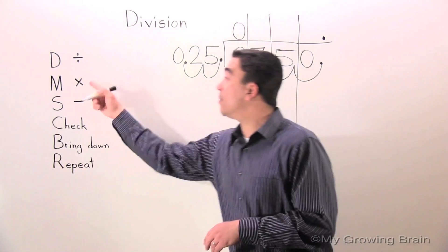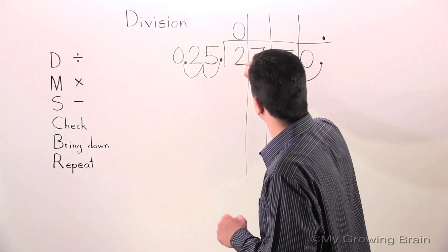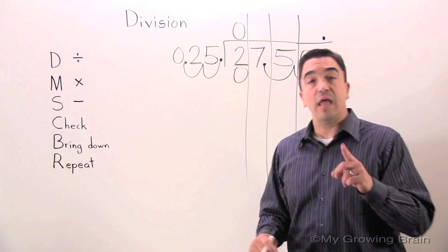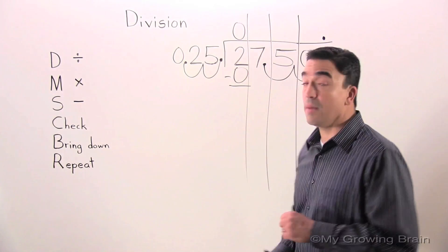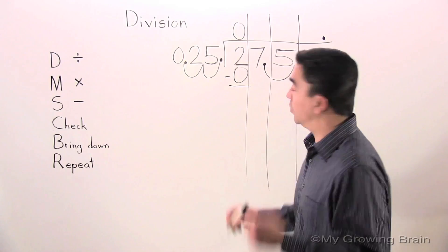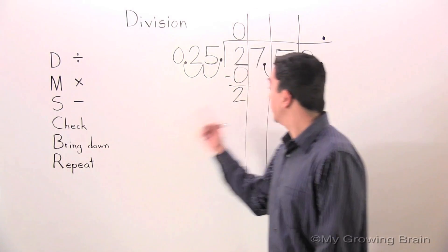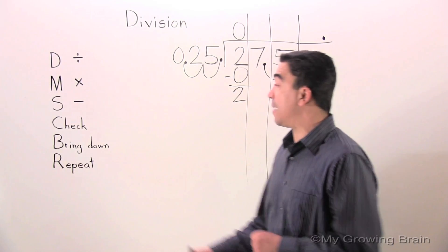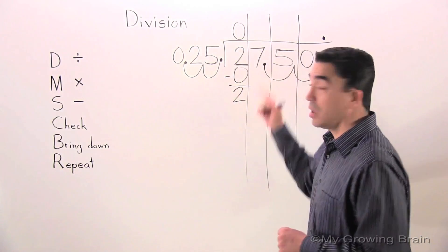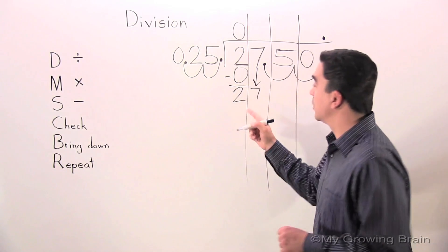Next step. Multiply. 25 times zero equals zero. Next step. Subtract. 2 minus zero equals two. Next step. Check. 2 is less than 25. Keep on going. Next step. Bring down. Bring down the 7. 27.